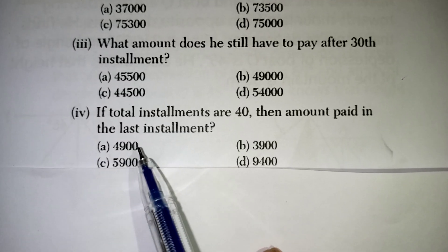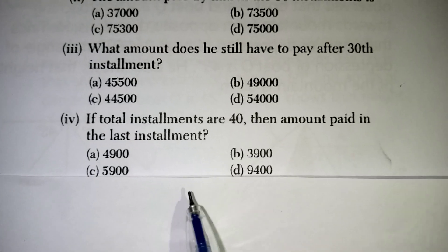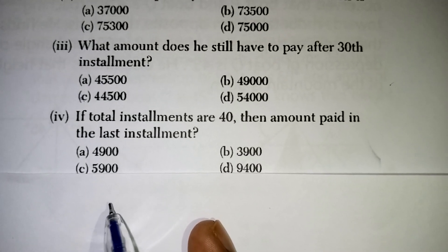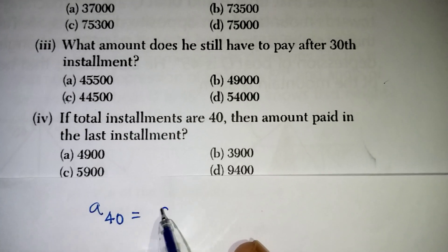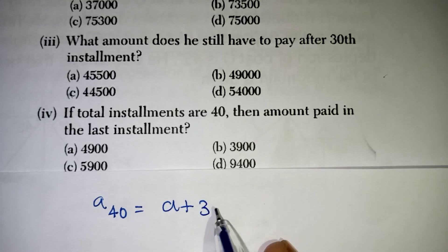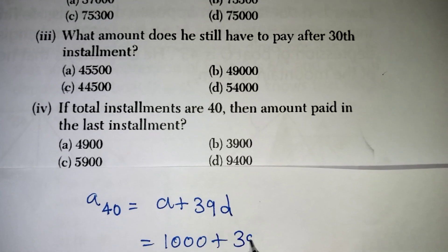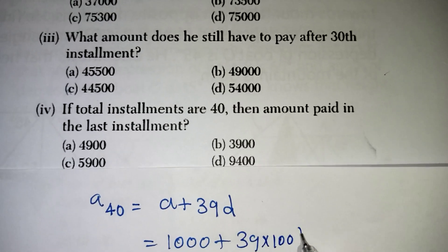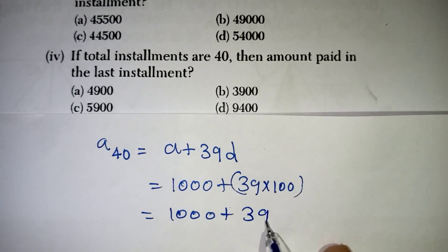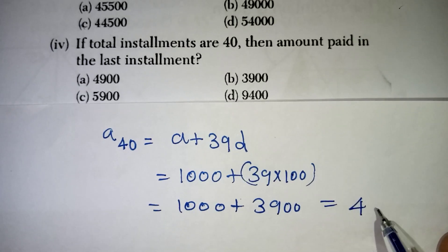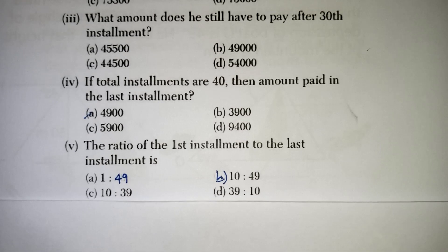Next question. If the total installments are 40 then amount paid in the last installment. So, total installment 40 now. A40 we need to find out. That is the last installment value. A40 will be written as A plus 39D that is 40 minus 1D. So, A value first installment is 1000 plus 39 into difference is 100. So, we can write it. So, 1000 plus 3900. 3900 plus 1000 will be 4900. That is your first option.